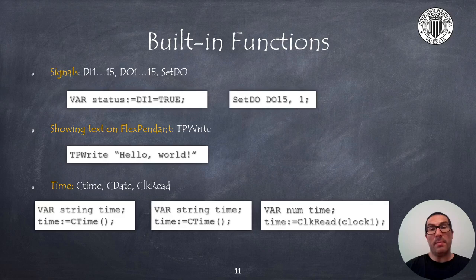Rapid can read up to 16 digital input signals and set the value of up to 16 digital output signals of the robot controller. This type of signals allows you to, for instance, control the gripper, to open or close the gripper, or to detect the correct position of a part. We can also show text messages on the flex pendant, that is the robot's control pad, to show the status of our program. It also has functions to get the measure of time, to get the current date, and read the system clock.